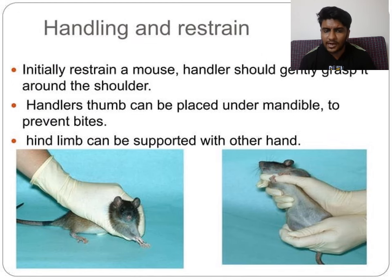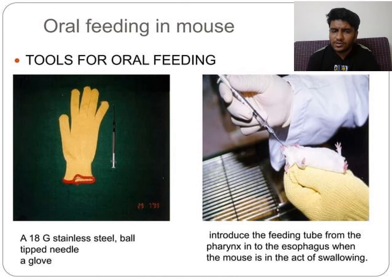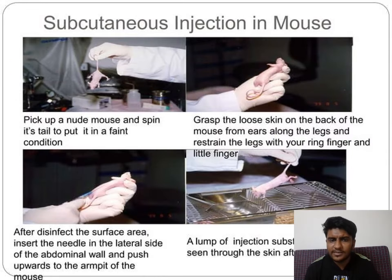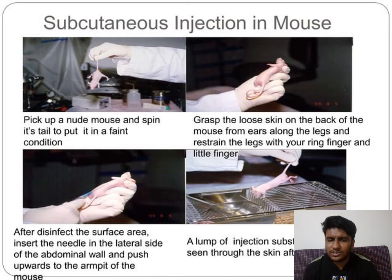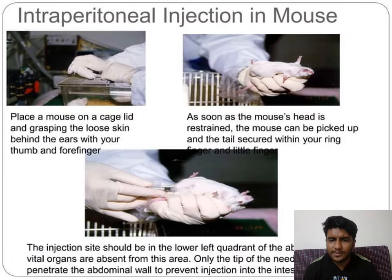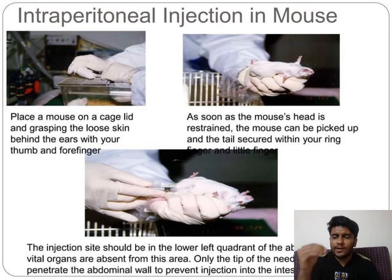Handling and restraining animals is an art. Oral feeding tubes — with a glove and oral gavage — are used to feed into the oral cavity. For subcutaneous injection: pick up the mouse, grab the loose skin, disinfect the area, and at a 45 or 30-degree angle slowly insert the gauge needle. For intraperitoneal injection: instill into the peritoneal cavity using one of four quadrants — upper right, lower right, lower left, upper left — ensuring only the needle tip penetrates, not the entire needle.